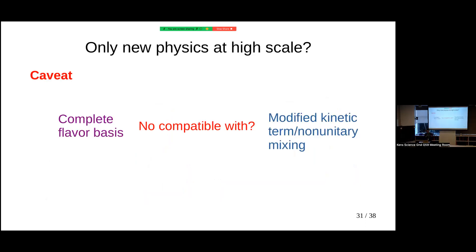There is a caveat: I assumed the flavor basis is complete. But when you have the modified kinetic terms resulting in non-unitary U, starting from a UV model the flavor basis may actually not be complete — you may have more than just e, μ, τ. The whole probability construction assumed a complete flavor basis. So this modification may not make sense if the flavor basis is actually incomplete — implying you have four or more flavor states. I have not been able to prove or disprove this yet.